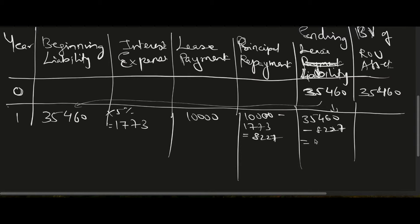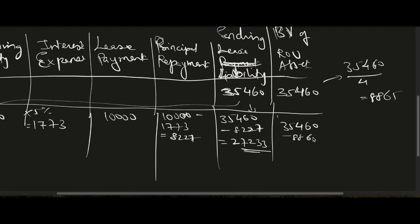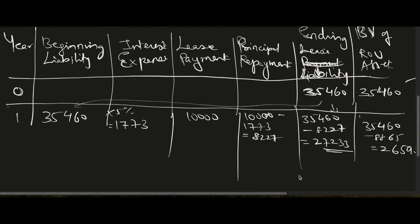The ending lease liability for Year 1 is 35,460 minus 8,227 principal repaid = 27,233. For the right-of-use asset, straight-line depreciation over 4 years gives 35,460 ÷ 4 = 8,865 per year. So the asset book value at end of Year 1 = 35,460 minus 8,865 = 26,595.